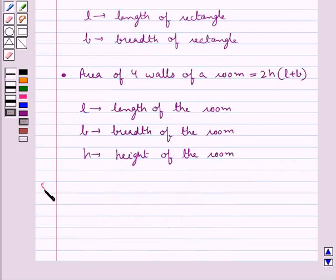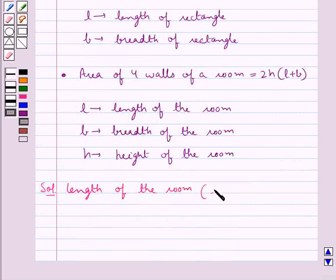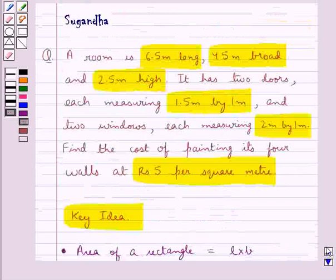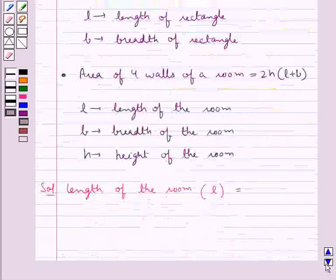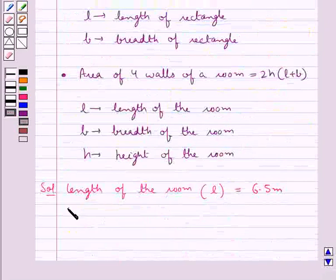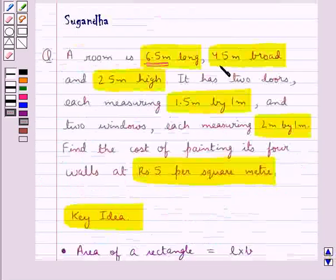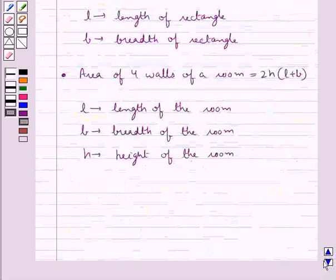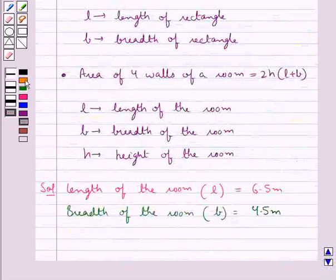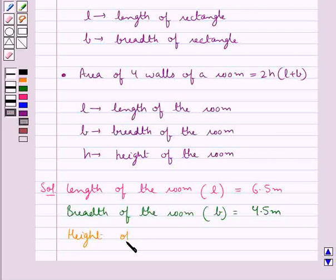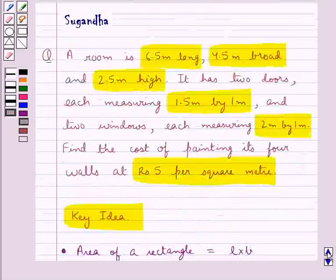Let's move on to the solution now. The length of the room, L, is given as 6.5 meters. The breadth of the room, B, is given as 4.5 meters. The height of the room, H, is given as 2.5 meters.